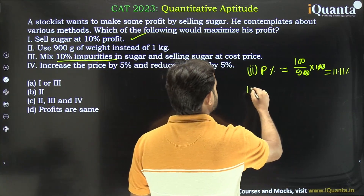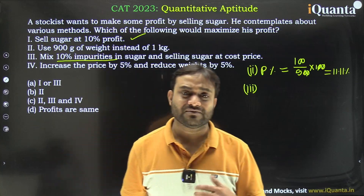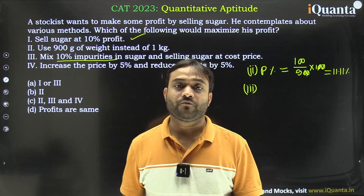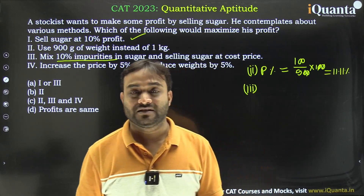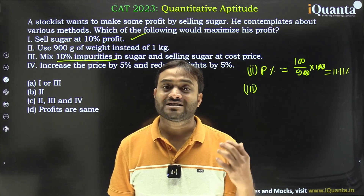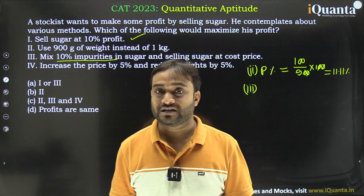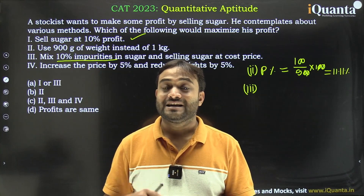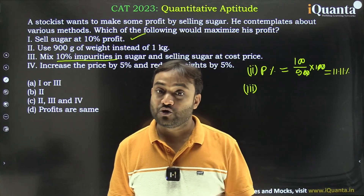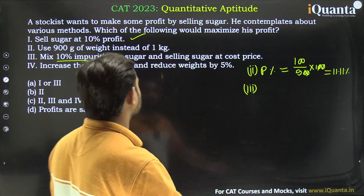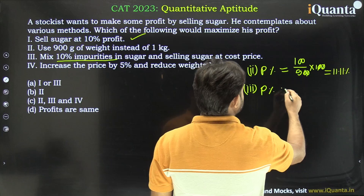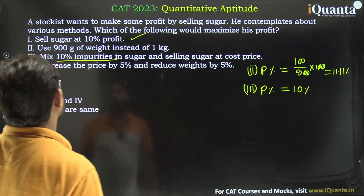The third case: mix 10% impurities in the sugar and sell at cost price. Whenever you add a particular percentage of impurity, the profit percentage equals exactly that percentage. For example, if 1 kg rice costs 100 rupees and you add 10% impurities, you have 1100 grams sold at 110 rupees, giving 10 rupees profit on 100 rupees cost — so profit is 10% in the third case.